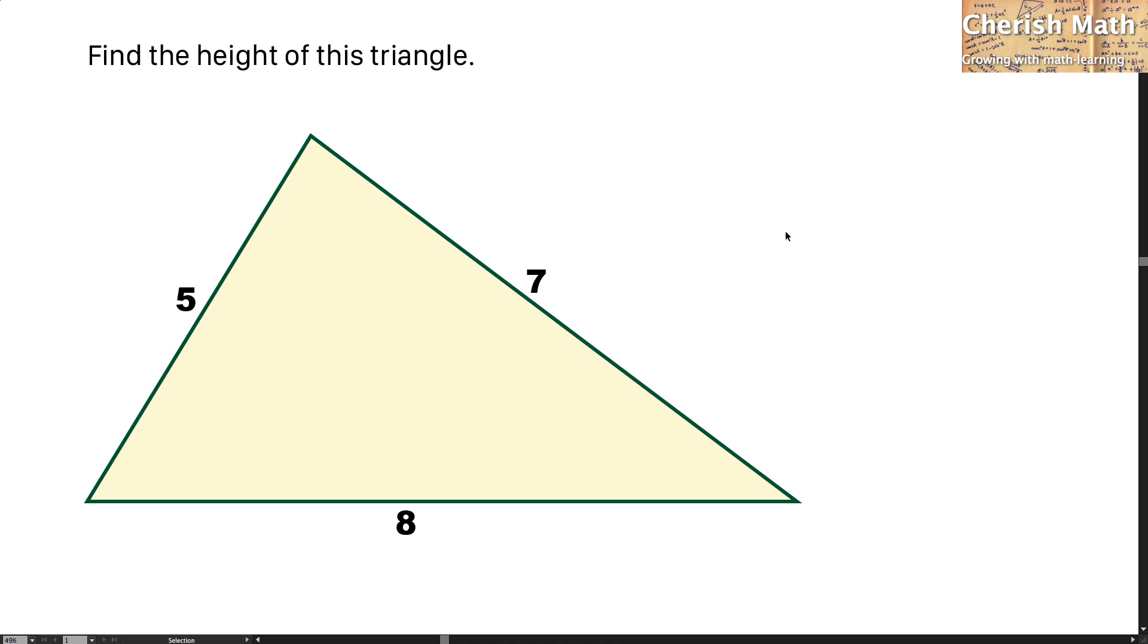In the first step towards the Heron's formula, I am going to find what is the value of the semi-perimeter. And that is by using 5 plus 7 plus 8 and divide by 2. And I denote it with S as the semi-perimeter. And the value that I am going to get here is S equal to 10.